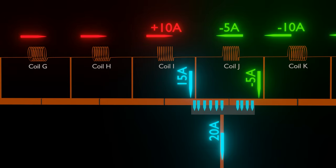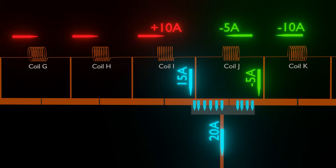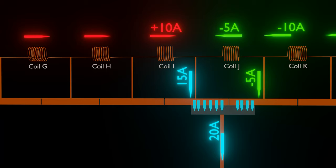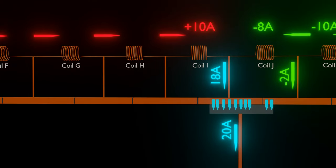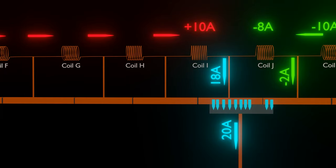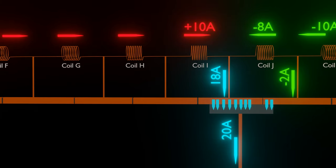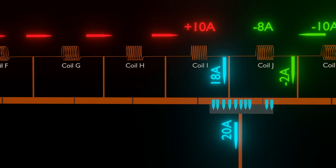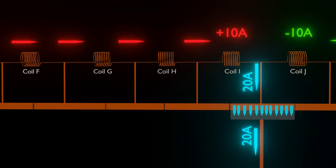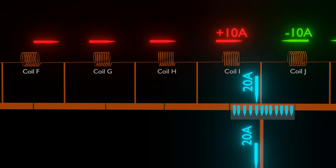Suppose now 5A flows through the previous commutator; the remaining 5A flows through coil J in reverse — that is, the left direction. When coil J moves further to the right, the area of the previous commutator decreases further, so current decreases further. Now suppose 2A flows from that commutator and the remaining 8A flows from the coil in the left direction. When coil J moves further right, the previous commutator loses contact with the brush and the entire 10A flows through coil J in the left direction.